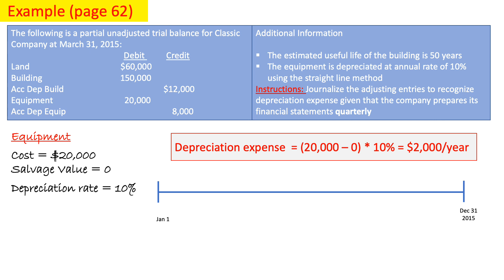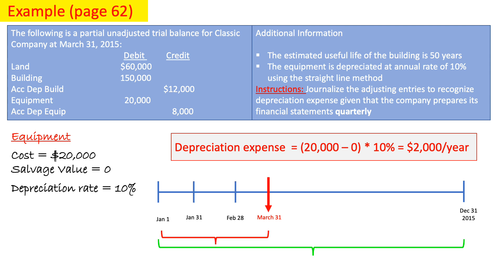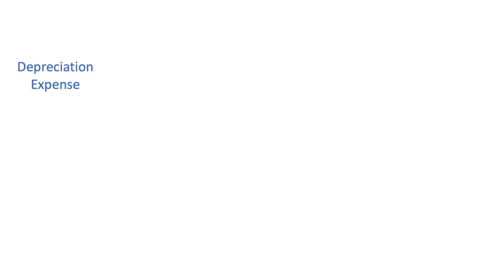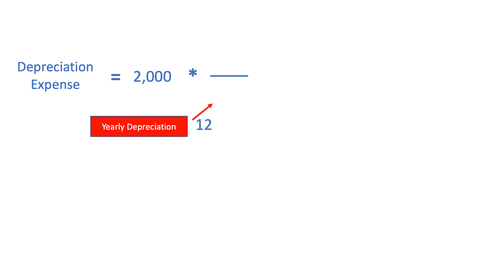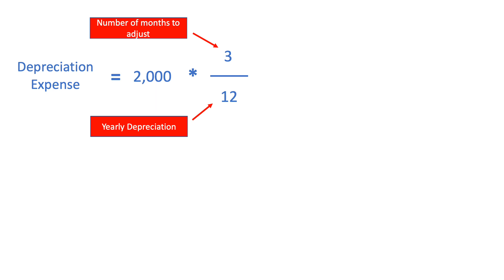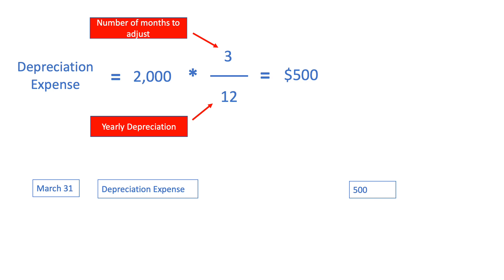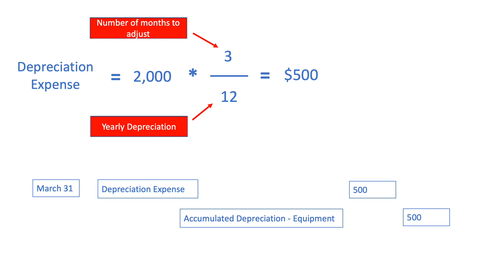Again, we have the yearly depreciation for 12 months but we need only the depreciation until March 31 — 3 months. We take $2,000 and multiply by 3/12, giving us $500 for 3 months. The adjusting entry is: debit Depreciation Expense $500 and credit Accumulated Depreciation — Equipment $500.